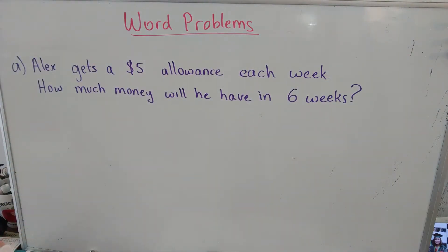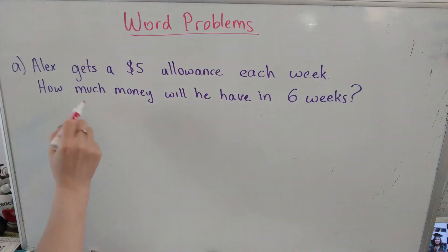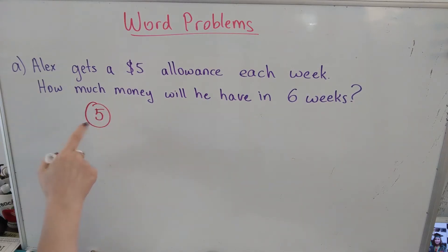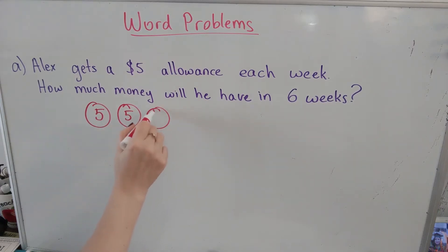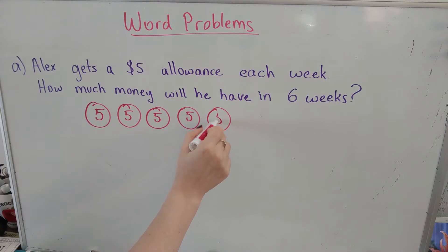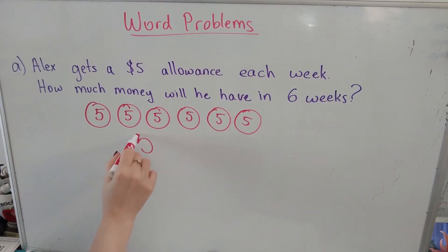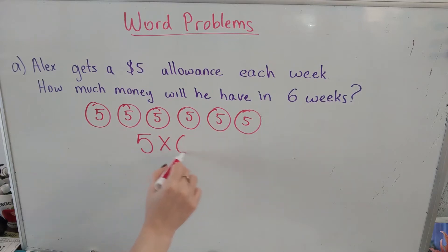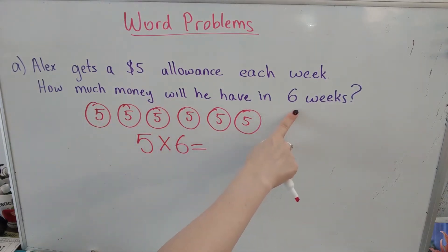Alex gets a $5 allowance each week. How much money will he have in six weeks? So each week he gets $5 — that's one week, two weeks, three weeks, four, five, six weeks. So $5 times six weeks equals how much money he will have in six weeks total?